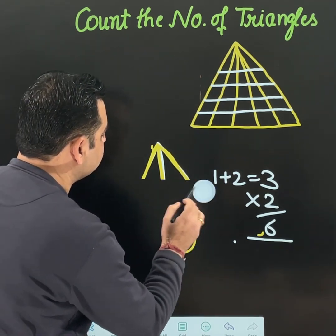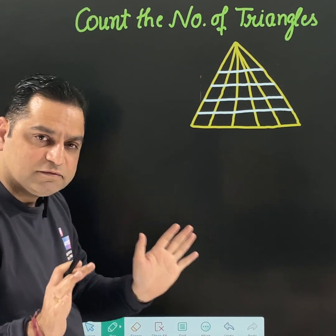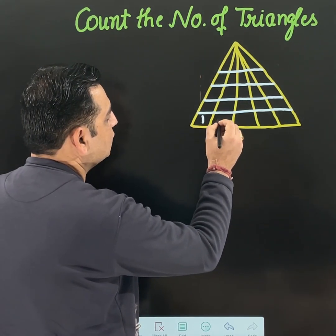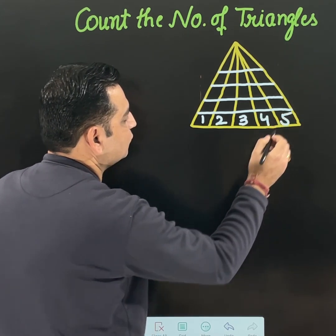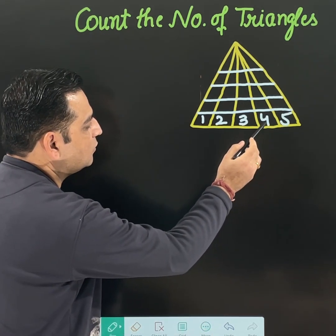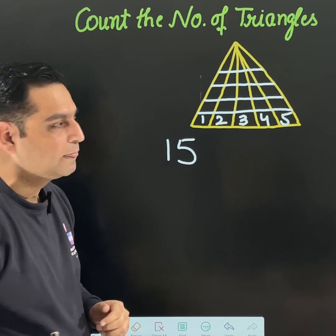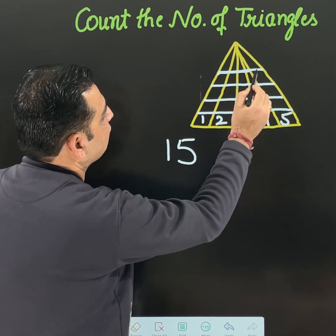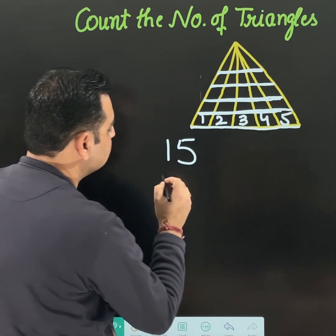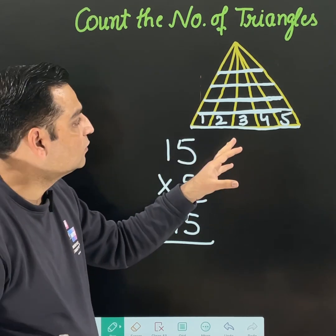Now in fractions of seconds you will be able to give the answer for the main diagram — that was the main aim. You can see the boxes at the bottom. Directly write 1, 2, 3, 4, 5. The counting goes from 1 to 5. Add them: 5 plus 4 is 9, plus 3 is 12, plus 2 is 14, plus 1 is 15. Now count the horizontal lines: number 1, 2, 3, 4, and 5 — five horizontal lines. Multiply: 15 times 5 equals 75. That is the total count of triangles in this diagram.